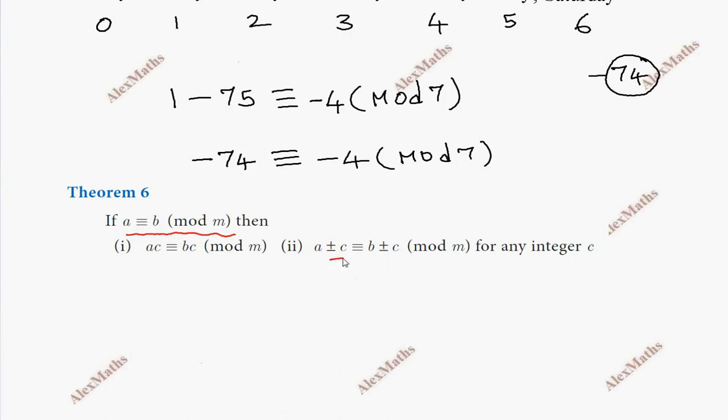Plus or minus c — we add 7. If we add 7 to this part, we get a positive equivalent.